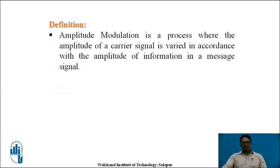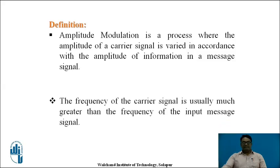Amplitude modulation is defined as a process in which the amplitude of the carrier signal is varied in accordance with the instantaneous values of the amplitude of the information signal, also known as the modulating signal. The carrier used here has a higher frequency than the modulating signal. In other words, the modulating signal is superimposed on the carrier signal and then transmitted.